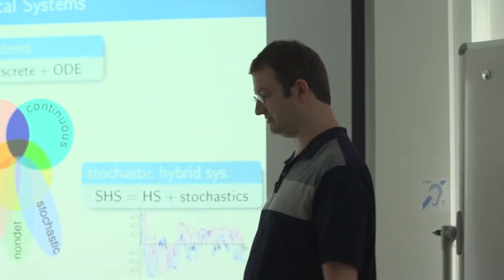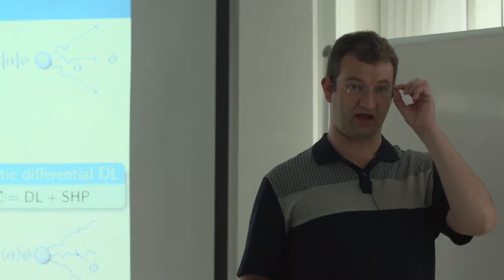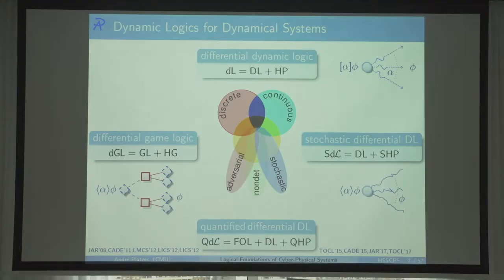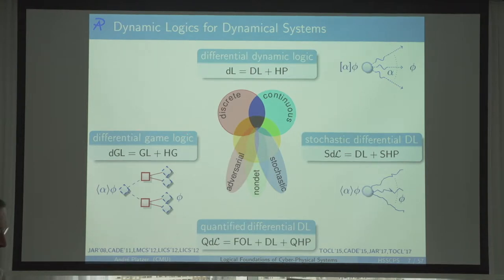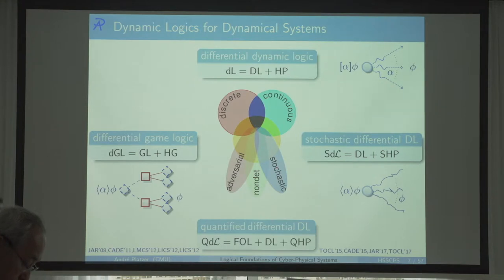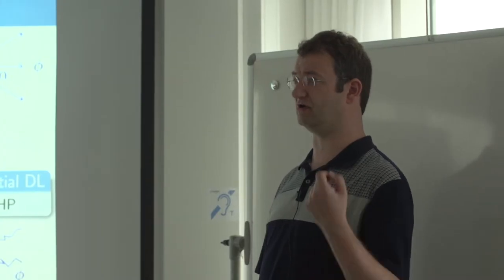Today I'll focus on the hybrid systems aspect. For each class of systems there is a dedicated logic. Differential dynamic logic (dL) is the logic for hybrid systems, and I will focus mostly on that. Whatever I say extends to the adversarial case via differential game logic, to stochastic dynamics via stochastic differential dynamic logic, or to distributed hybrid systems via quantified differential dynamic logic — covering things like many cars, many UAVs, or many aircraft.